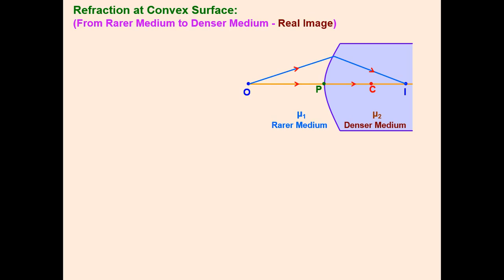Two incident rays are drawn — a blue line and an orange line. The blue line shows refraction taking place, while the orange line is incident at the pole P at zero degrees angle of incidence and zero degrees angle of refraction, so it passes without deviation. When the ray enters the denser medium, it bends towards the normal.